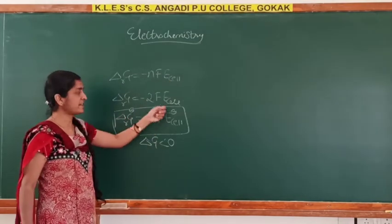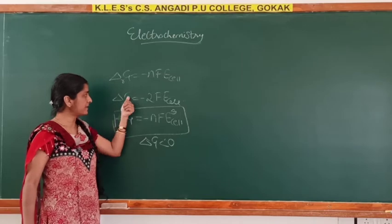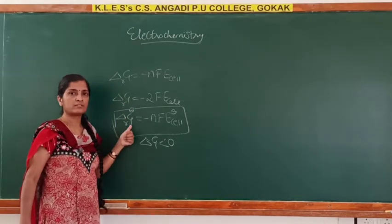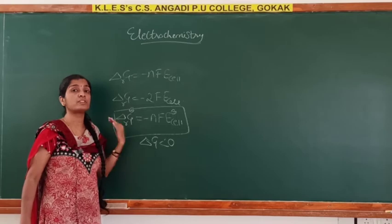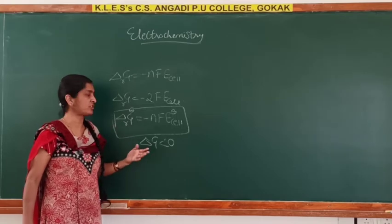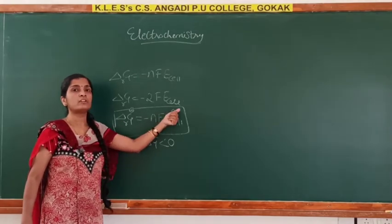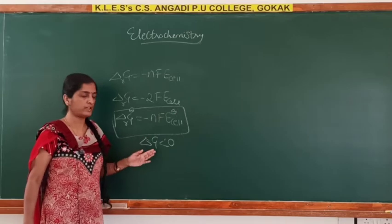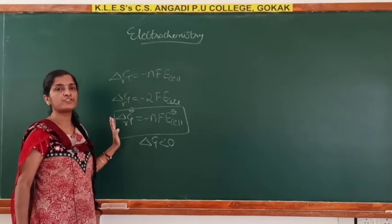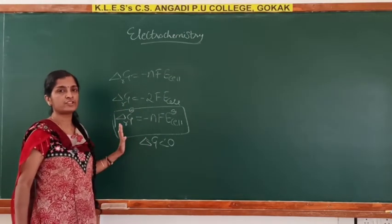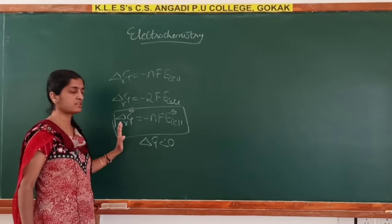Under standard conditions, delta G_r becomes delta G°_r, which means standard conditions of temperature and concentration. E_cell becomes E°_cell. That is the relation between Gibbs free energy of the reaction and the EMF of the cell under standard conditions.